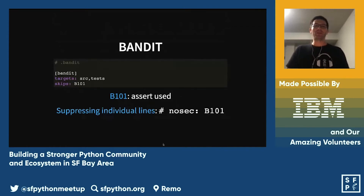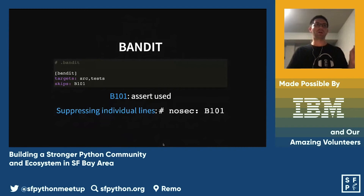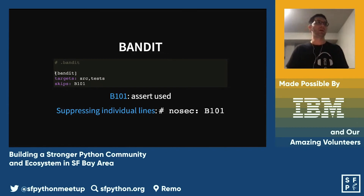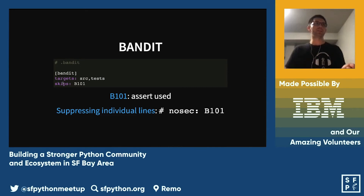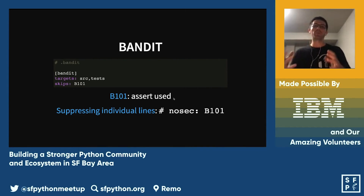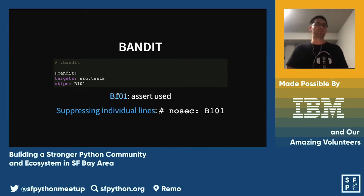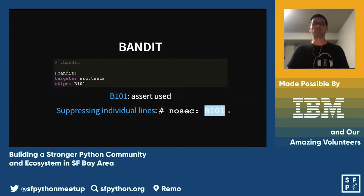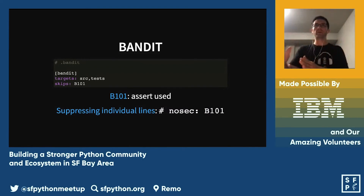Bandit configuration is a little painful. There's an ini file and a yaml config file and they do different things. I personally only use the ini file — I name it .bandit. I specify my target folders and always keep B101, which is the use-of-assert-statements warning. It warns you because if you compile your code, all assert statements are removed and could change your code's behavior. To silence alerts, use the # nosec comment with the error code at the end of the line.